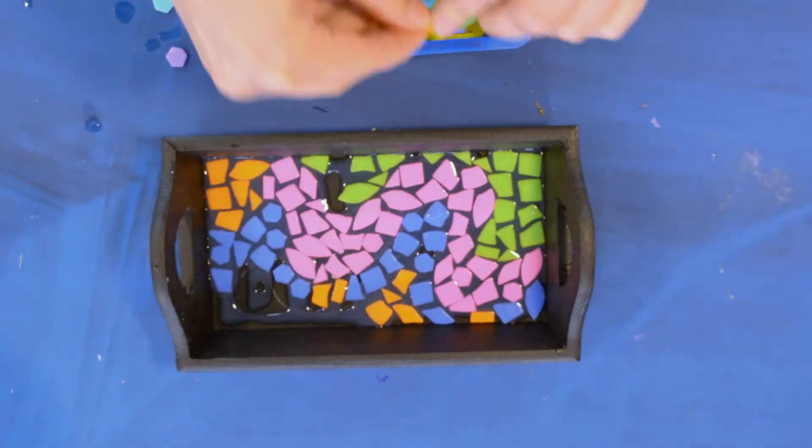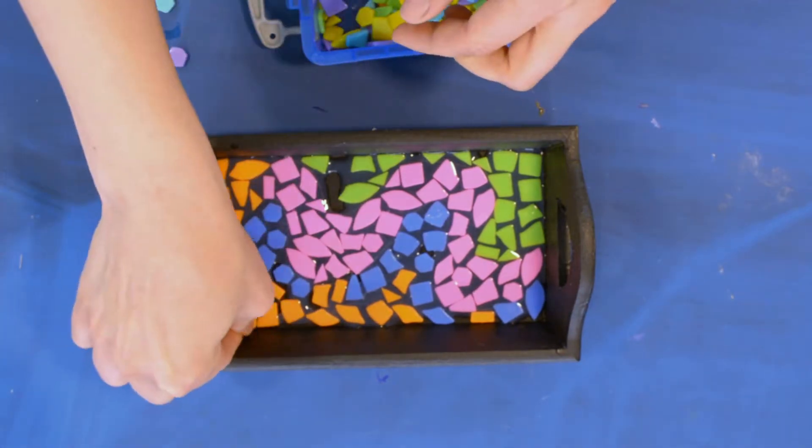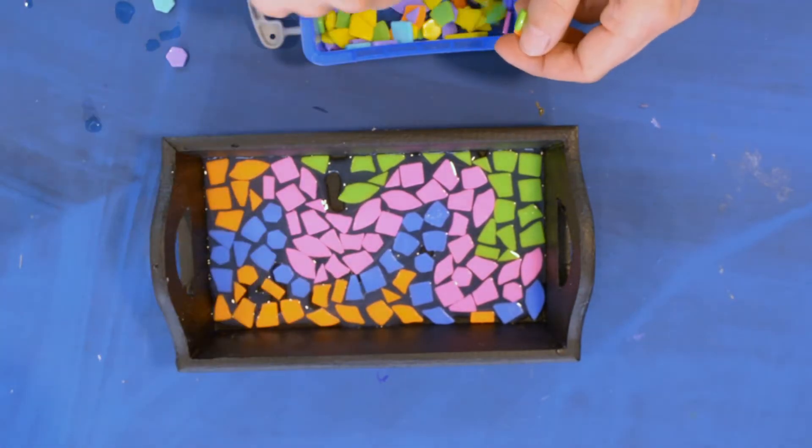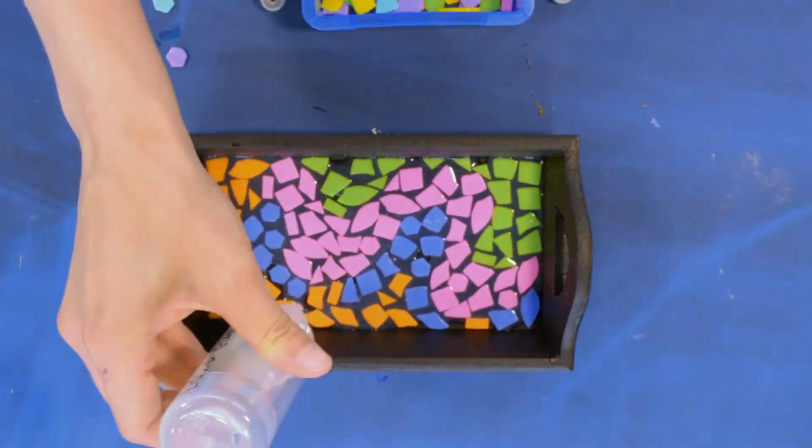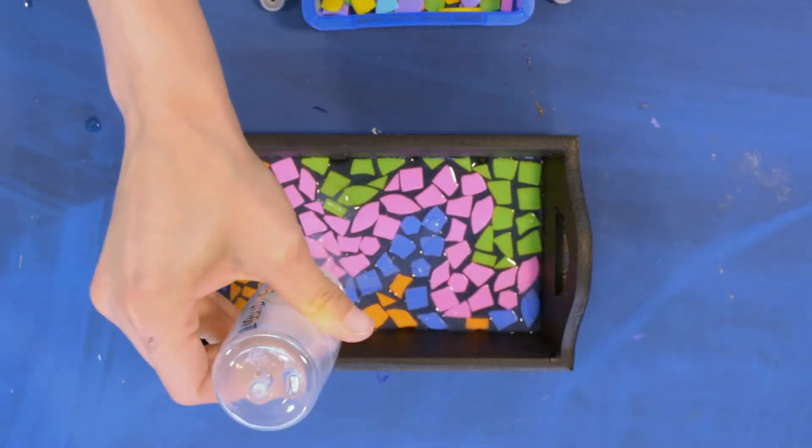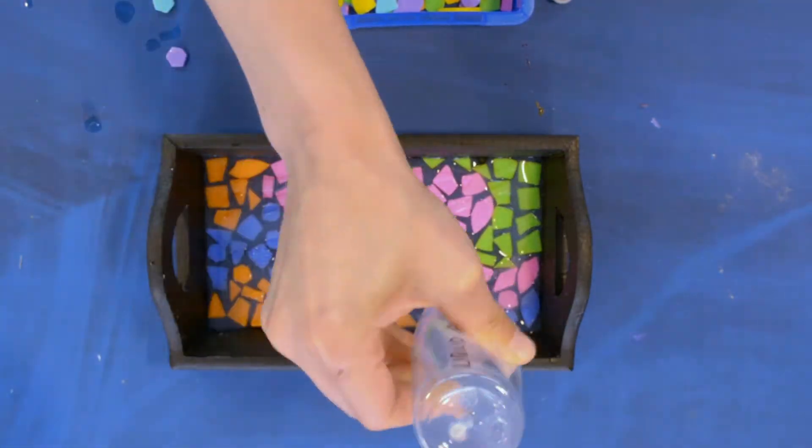And if you get a bit of the medium on your hands that we're using to glue this all in, the pouring medium, the liquid glass, you can just wash your hands after. Now you want to try and start in the middle and then build the rest around it. That's what I've found to be the easiest.